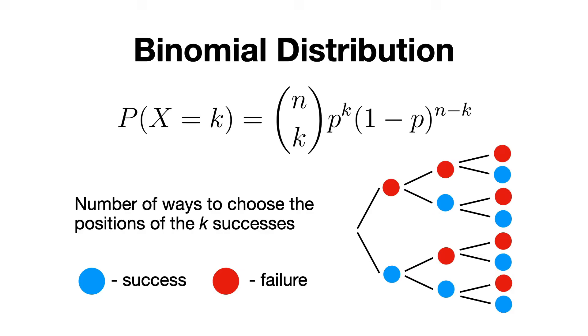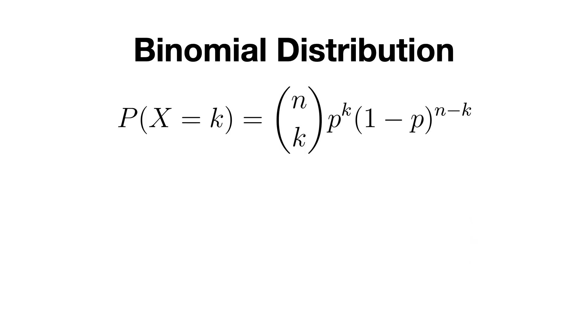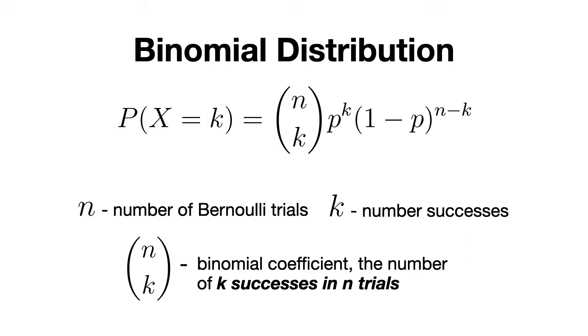Simply put, the binomial distribution is described by two parameters: n which is the number of trials, and p which is the probability of success in each trial. Thus, the probability of observing exactly k successes is given by the following formula. We've explained it in the previous video, so make sure to check it if you are not familiar with what each term here means.